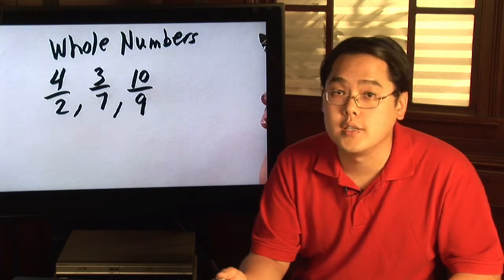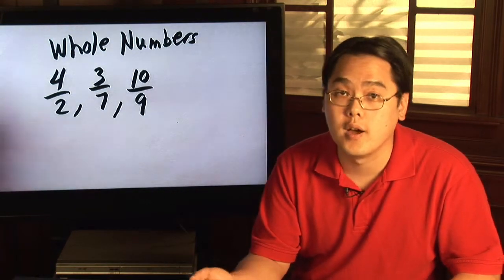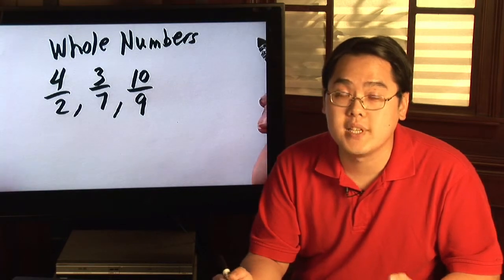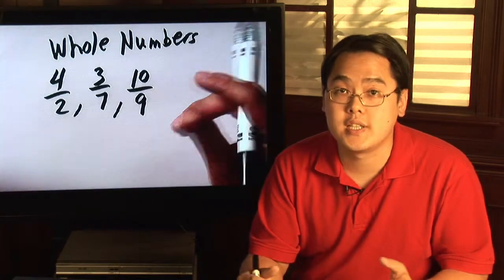For example, a quarter is one-fourth of a dollar. A dime is ten cents, so it's ten out of a hundred.